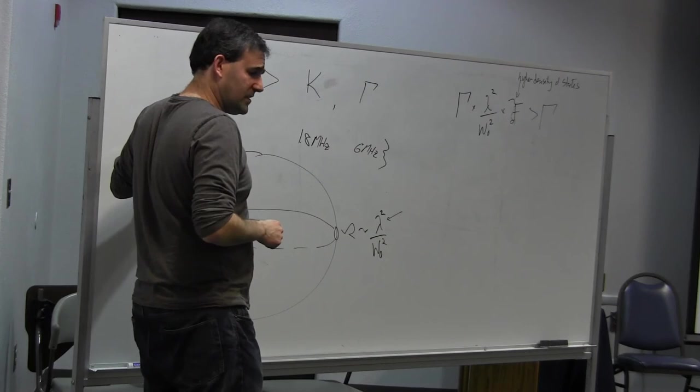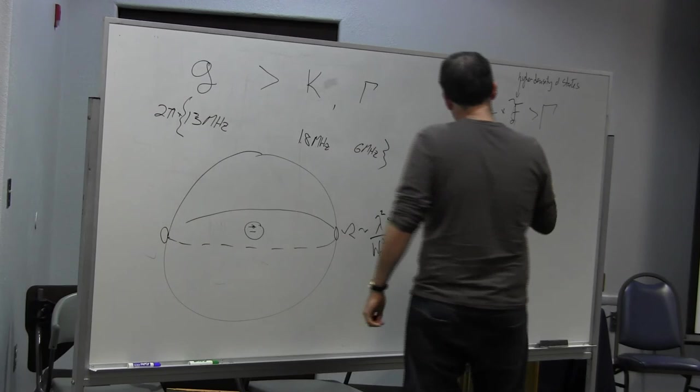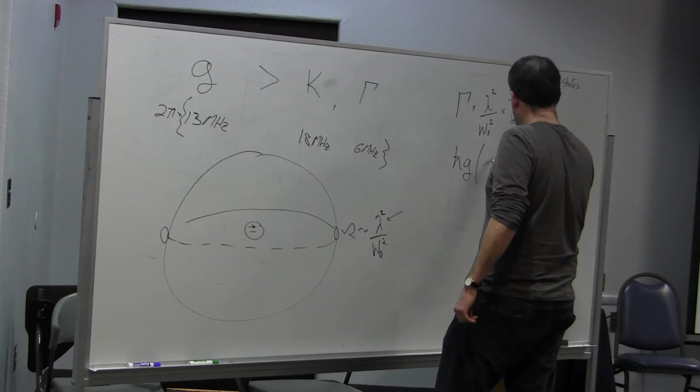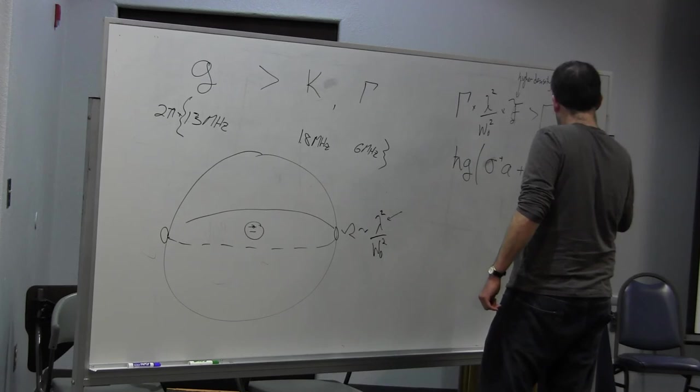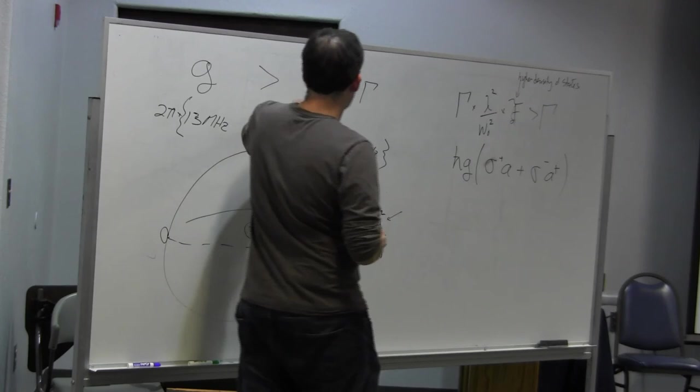So in the Jaynes-Cummings Hamiltonian, there will be a term which is like h-bar g, atomic raising operator, field lowering operator, plus the conjugate. So that's the g that I've given you.